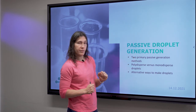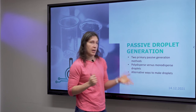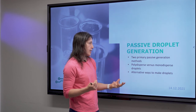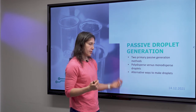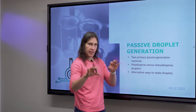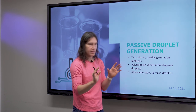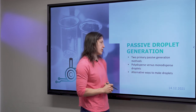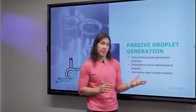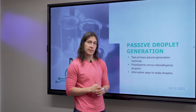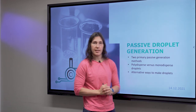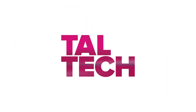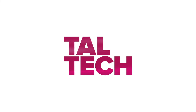To summarize what we covered: first, we looked at two primary passive ways to generate droplets. Then we looked at polydispersed versus monodispersed droplets — how they look and the advantages and disadvantages of both. Finally, we looked at some alternative ways to make droplets — with gravity or the portable push-button device. That is all. Thank you for listening.